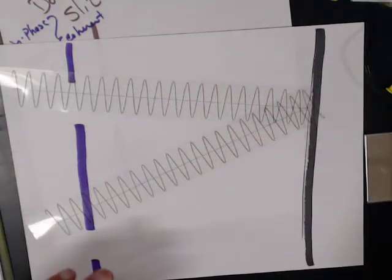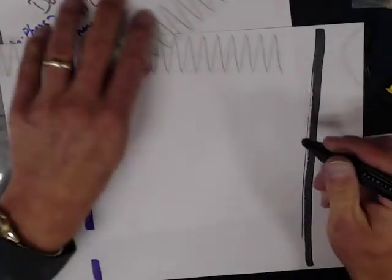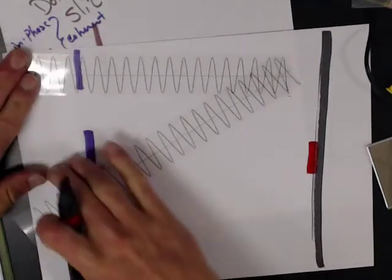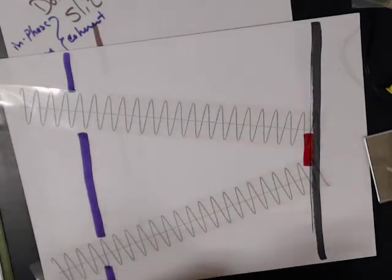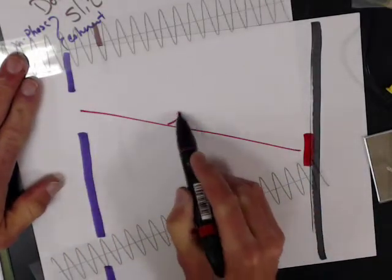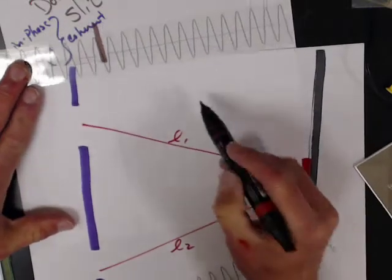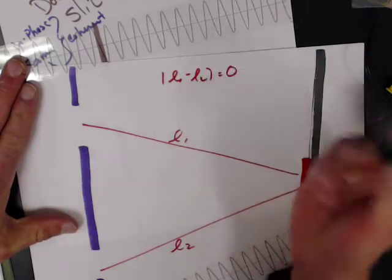So I'm going to have a red spot here, because there I get constructive interference. So that means the path length, so here's L1, here's L2. The difference between L1 and L2 is zero.